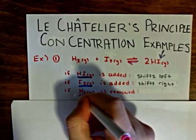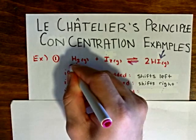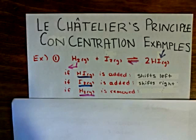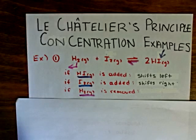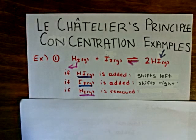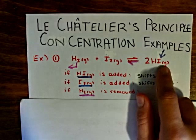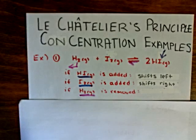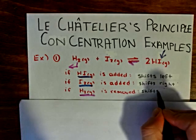Now, let's say hydrogen gas is removed. If we remove hydrogen gas, the system will try to replace the hydrogen that was lost. So that means it will take the product and turn it into iodine and hydrogen in order to recover the hydrogen that was lost. Therefore, we can say that the equilibrium in this case will shift to the left.